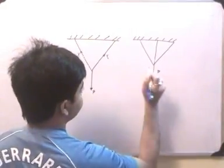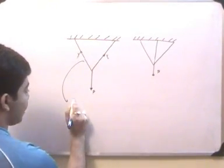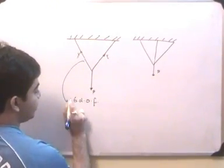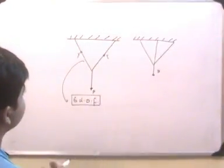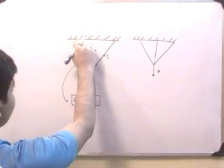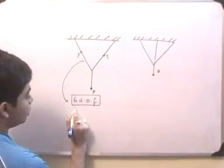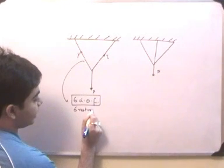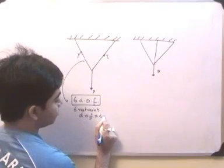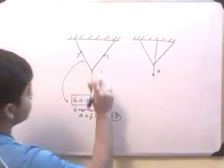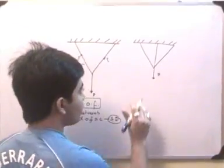In the two-bar system, I have six degrees of freedom as seen in a previous lecture. The number of constraints: two restraints due to support at one point, two restraints at another, and two more here — essentially six restraints. Since degrees of freedom equal constraints, this is a statically determinate structure.